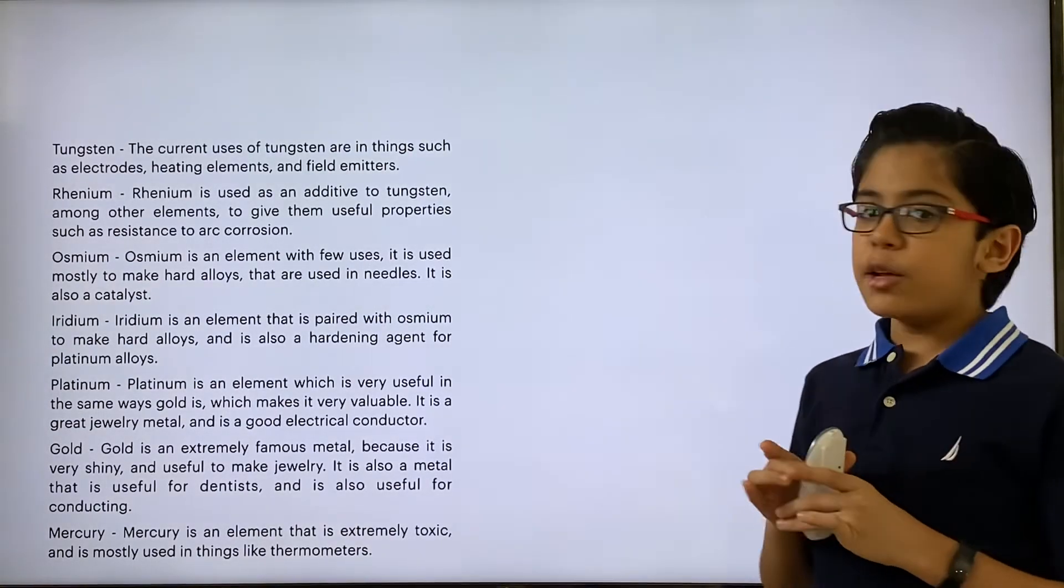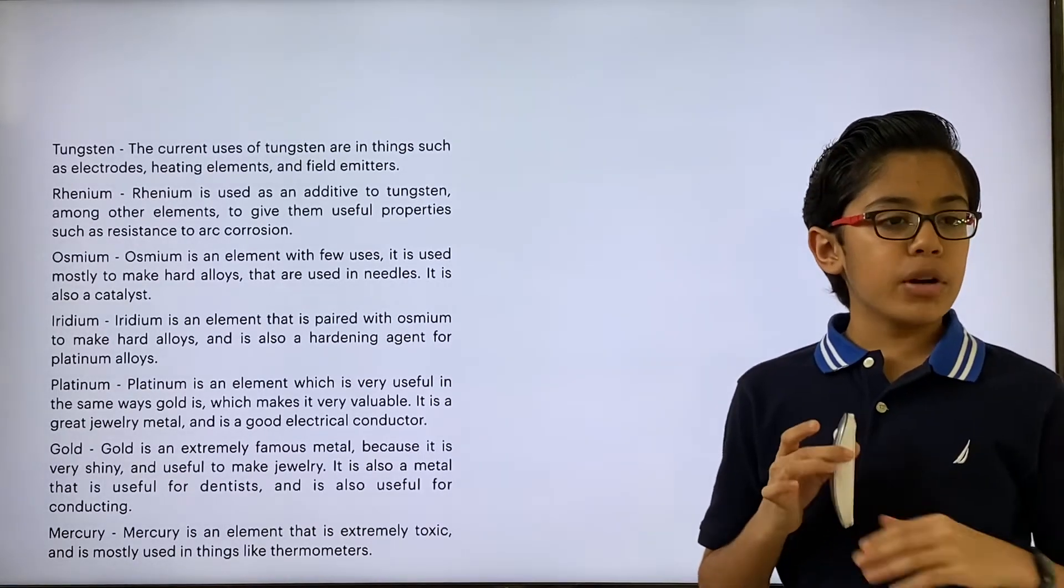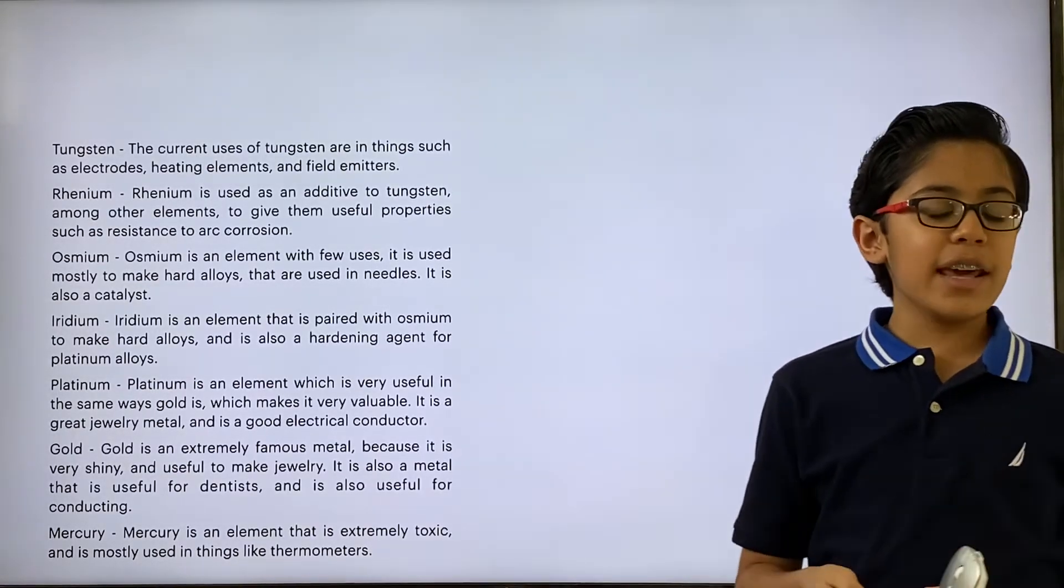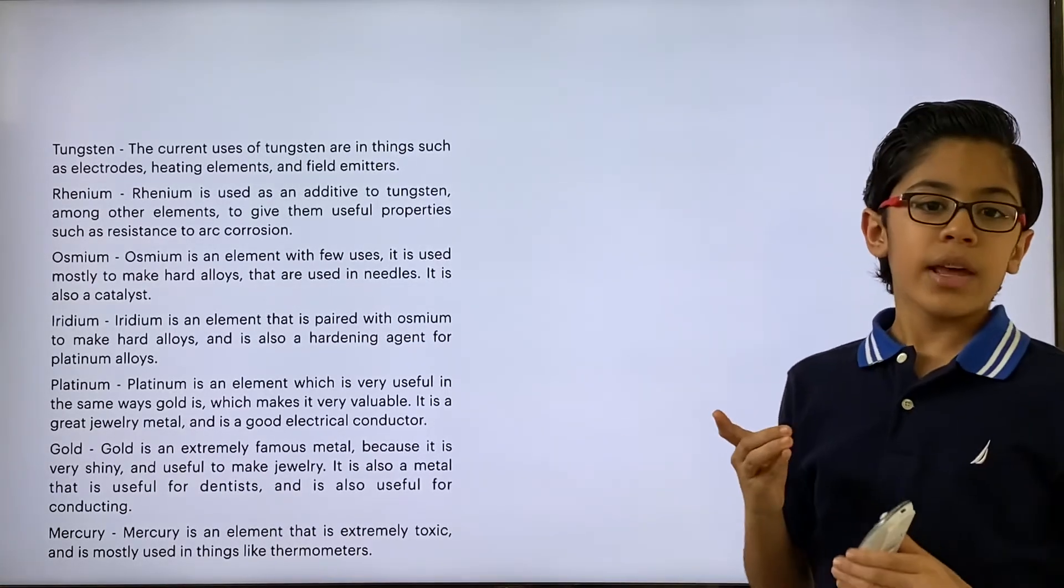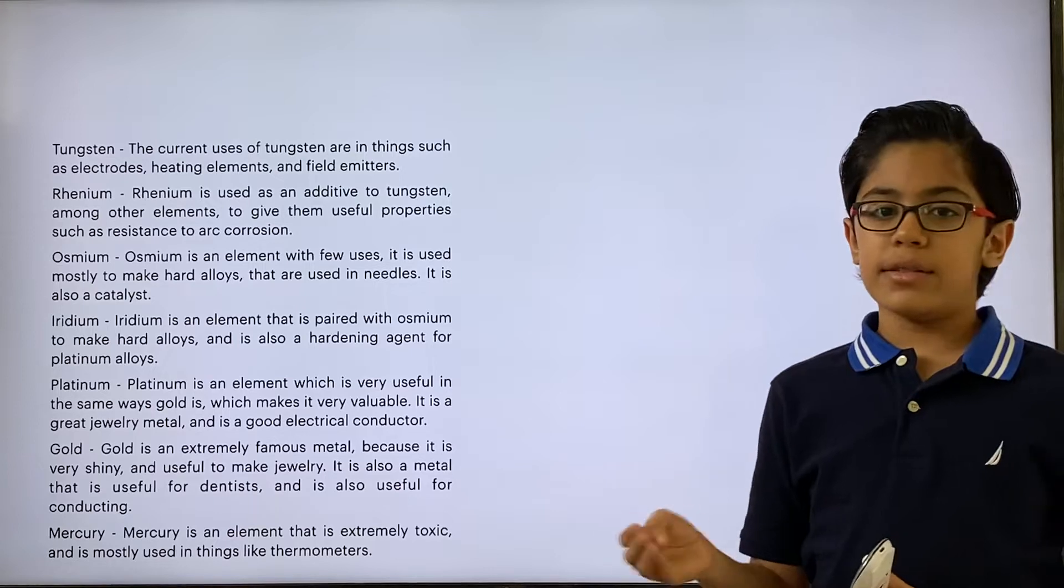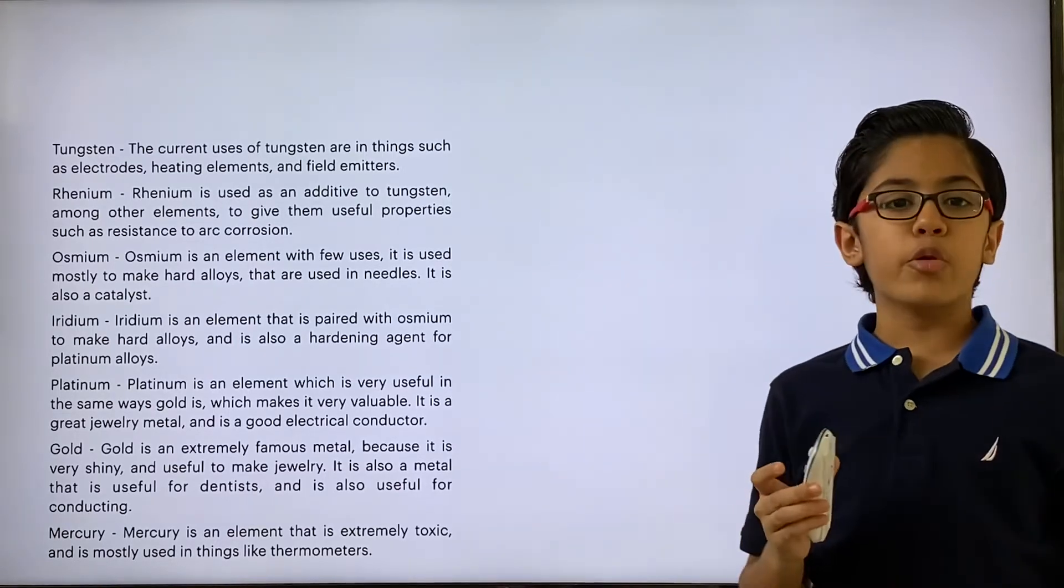Rhenium is an element you've probably never heard of, but when put in an alloy with tungsten, it gives tungsten its pizzazz because it makes them very strong and it gives it useful properties such as resistance to arc corrosion.